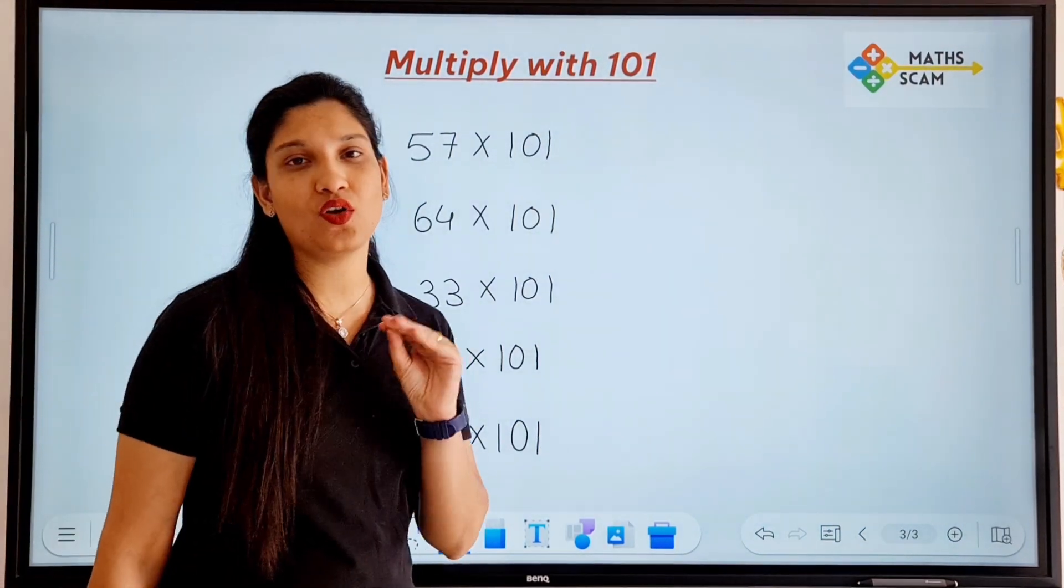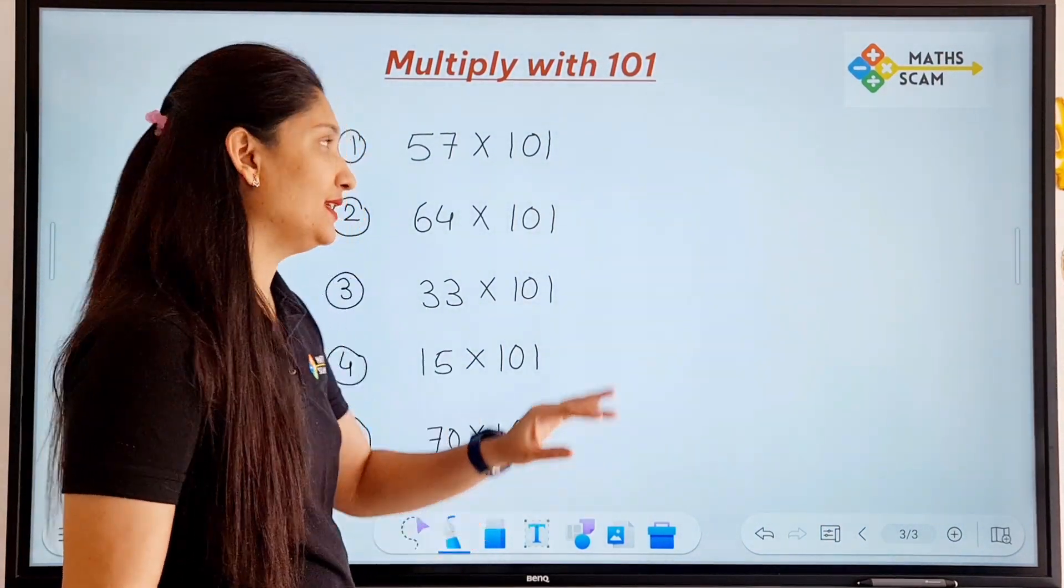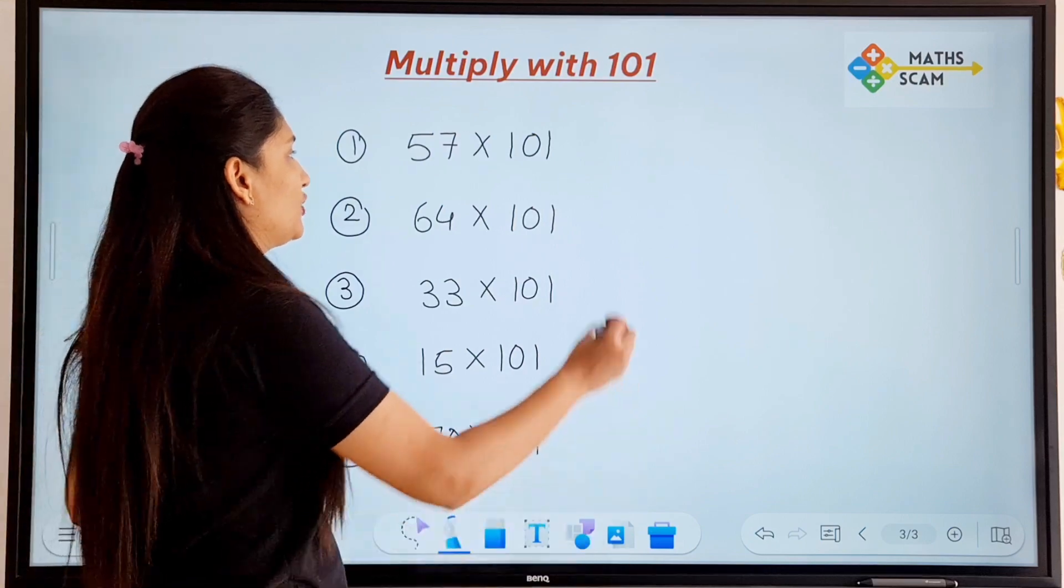It's the easiest trick of Vedic Maths you will ever see. The multiplier is 101. So what you have to do is,